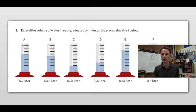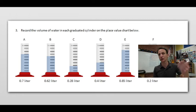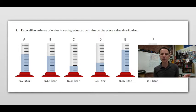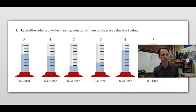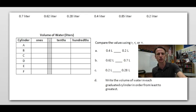Number three — notice the pattern: we did length with meters, then mass in kilograms, and now we're doing volume in liters. We have these cylinders with values: seven tenths liter, 62 hundredths, 28 hundredths, four tenths, 85 hundredths, two tenths liters.